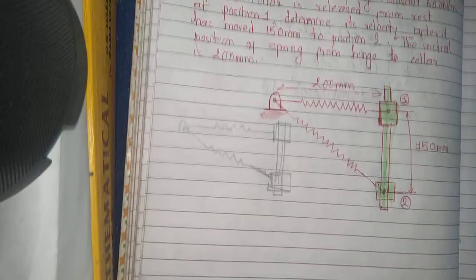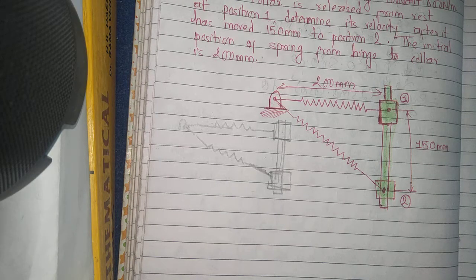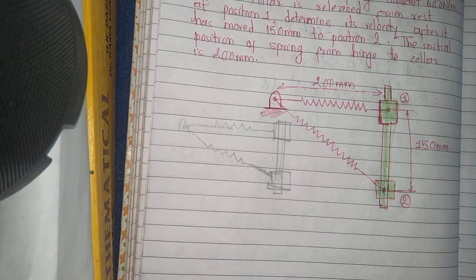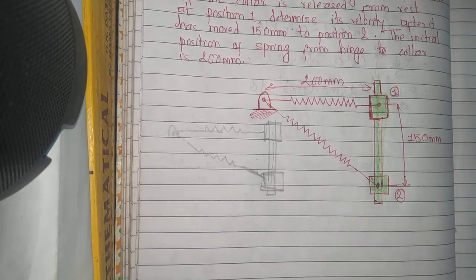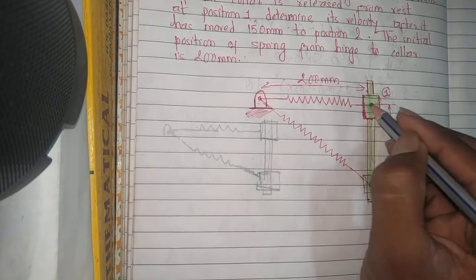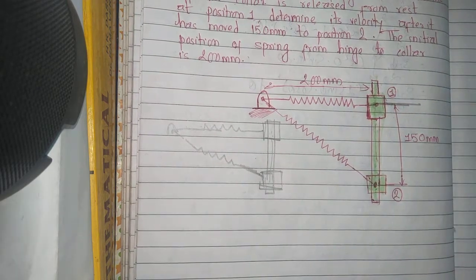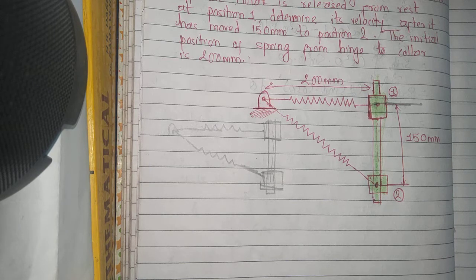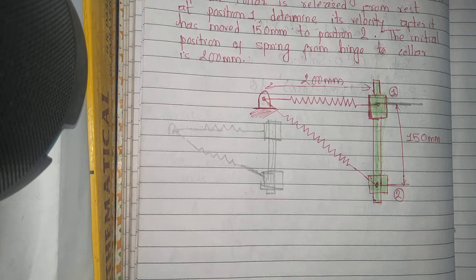In order to use the work energy principle, we need to find the potential energy and kinetic energy. To do this, we must first fix the position of the datum. Let us suppose position one is the datum — that is, the fixed reference point.